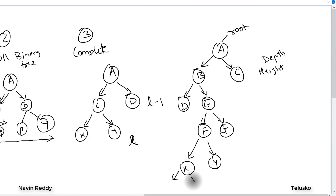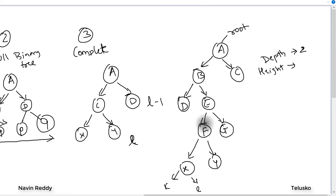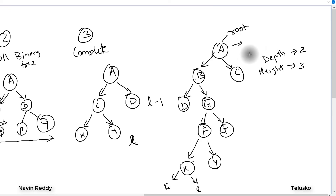The height of E is the longest path downward from E — through F, then X, then K — so height of E is three. The depth of the root node is always zero. The height of the root node follows the longest path: A, B, E, F, X, K — that's five. Height of the root node equals height of the tree, so the height of this tree is five.